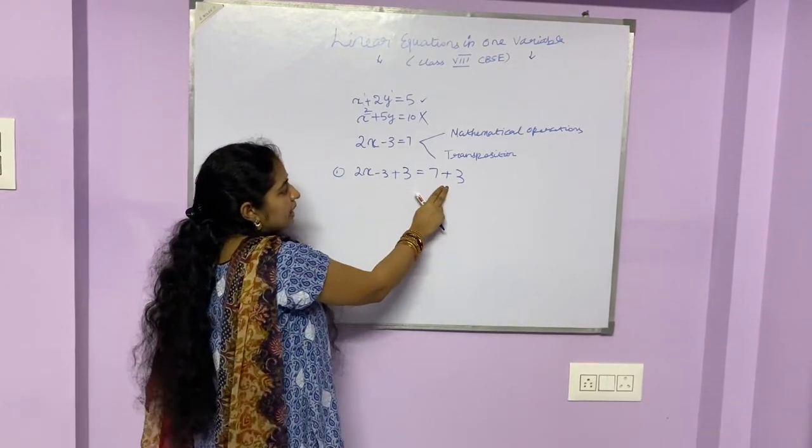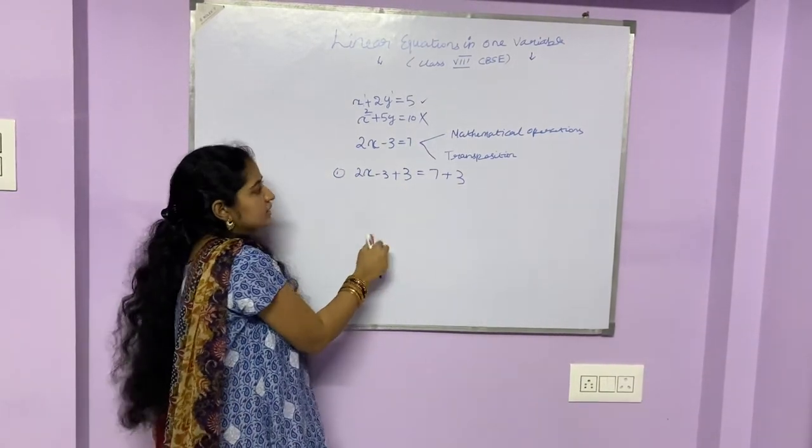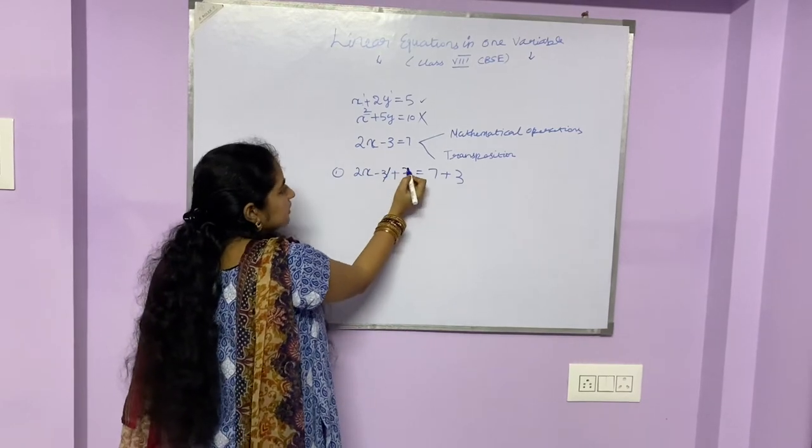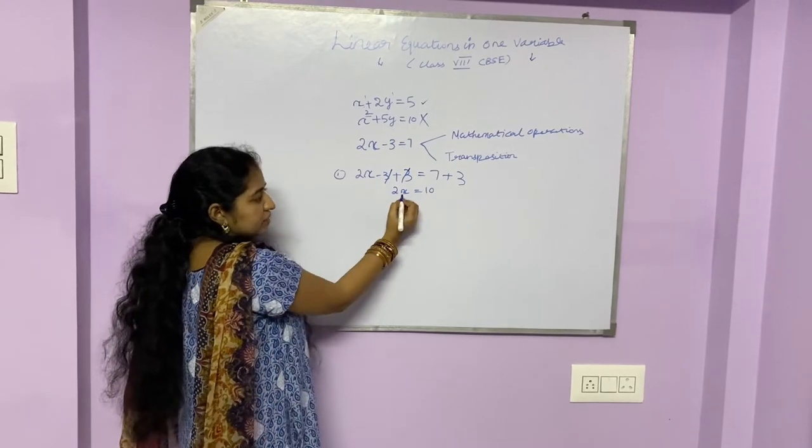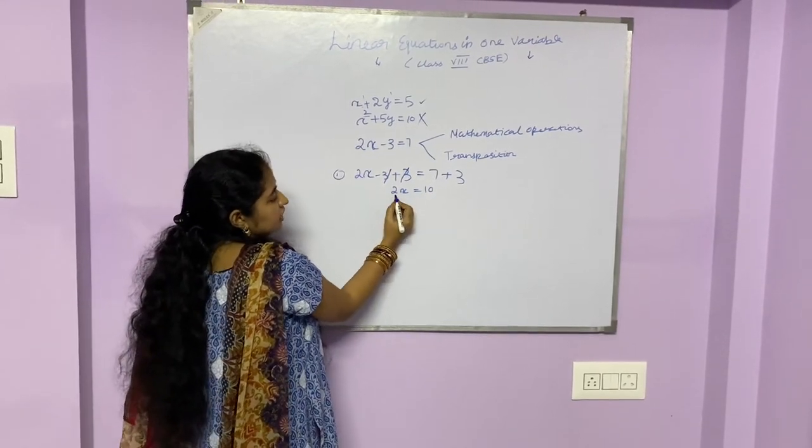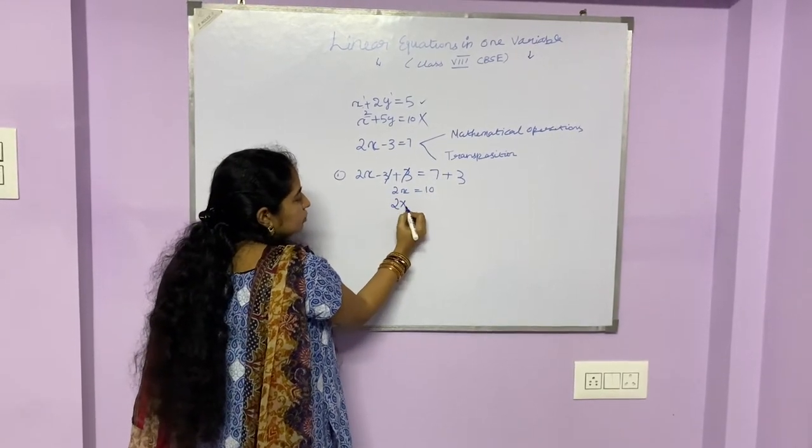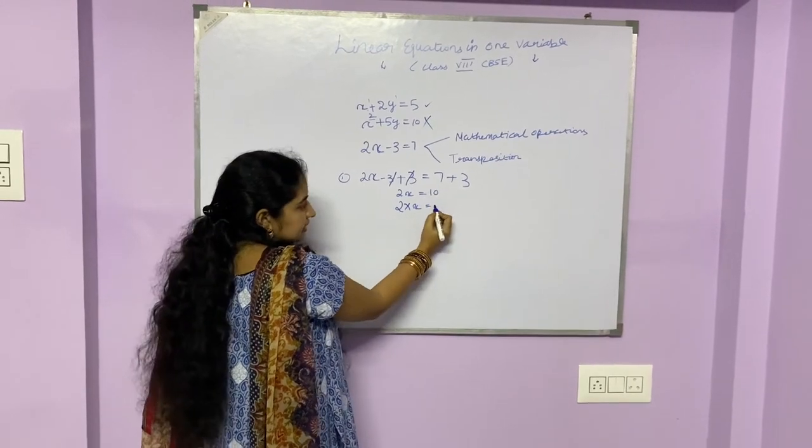Now, we see that the equation is balanced because I have added 3 to both sides. On the left-hand side, the positive 3 and the minus 3 gets cancelled, and we have with us 2x is equal to 10. Now, we need to find the value of x. Here, we know that 2x is nothing but 2 into x, and the right-hand side is 10.